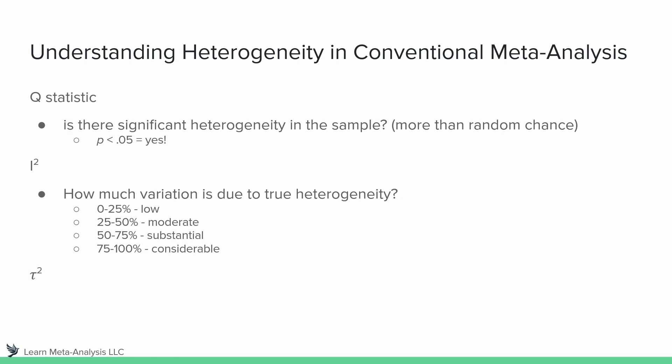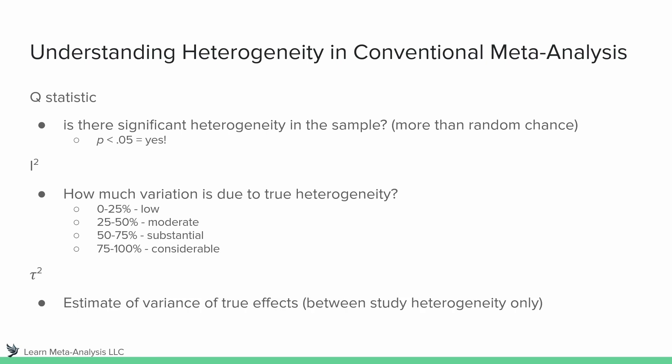Last but not least, we have tau-squared. This is the one that gives people the most pause and tends to be the most challenging to understand. We often don't even see it talked about in conventional meta-analyses — usually people report Q statistic and I-squared. But maybe they should, because tau-squared is the estimate of variance of the true effects, which is only the between-study heterogeneity.